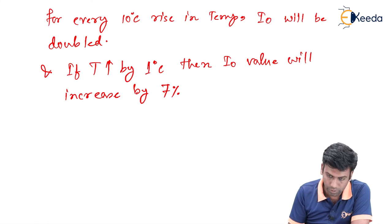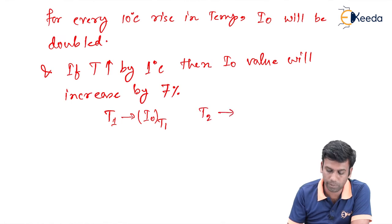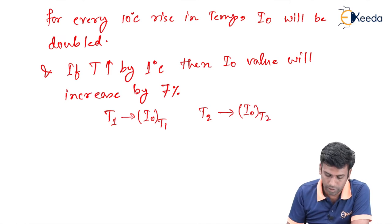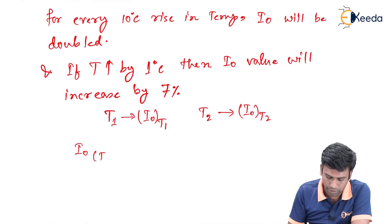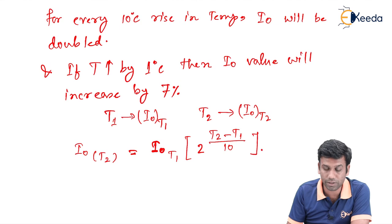Suppose we have a semiconductor which has an initial temperature of T1, and at this temperature we have a leakage current value that is I0 at T1. But after some time, the temperature of the semiconductor changes to T2, and at that value of temperature, the leakage current is I0 of T2. Now before going to this topic, I can find the value of I0 at T2 from this I0 at T1. That is, I0 at T1 into 2 to the power T2 minus T1 divided by 10. By this equation, we can find the value of I0 at T2, that is the leakage current of the final temperature from the initial temperature.